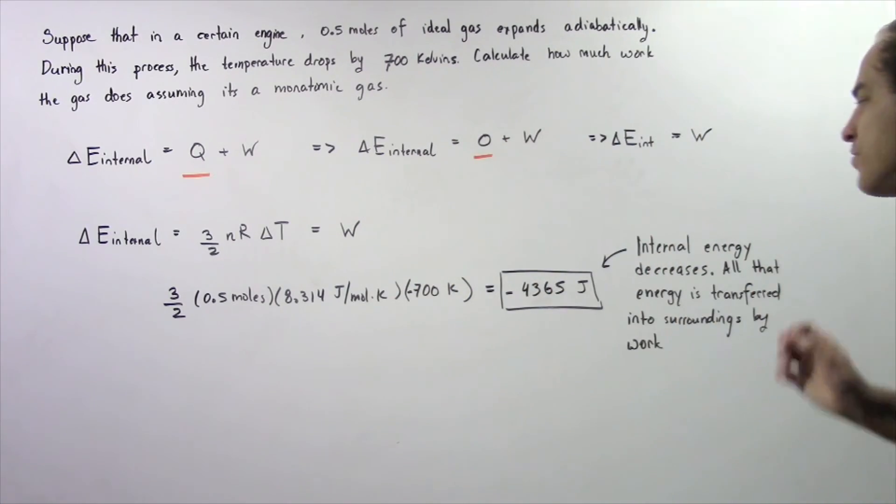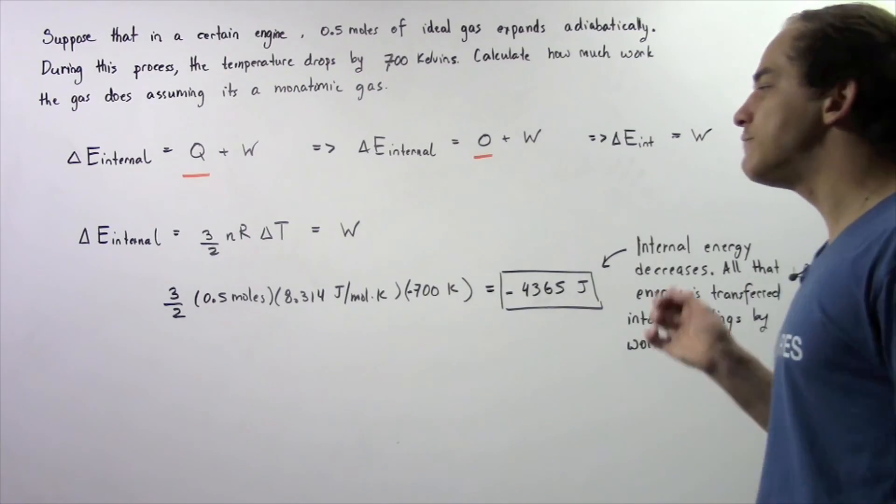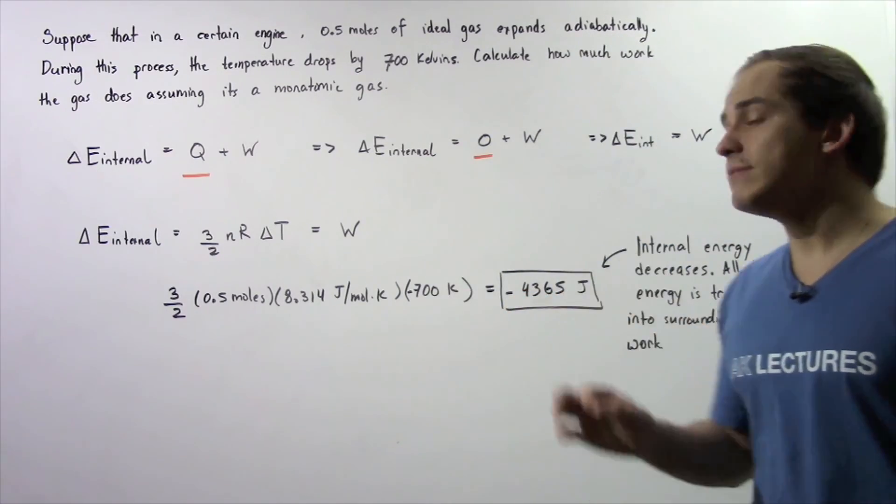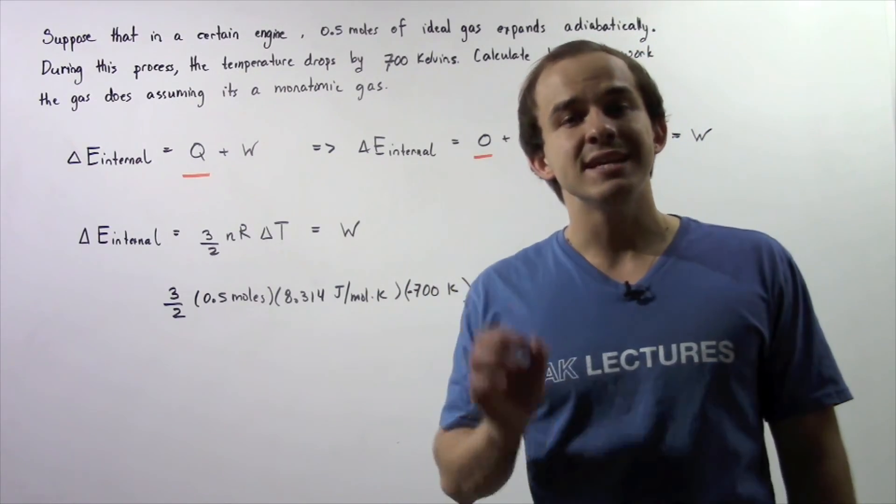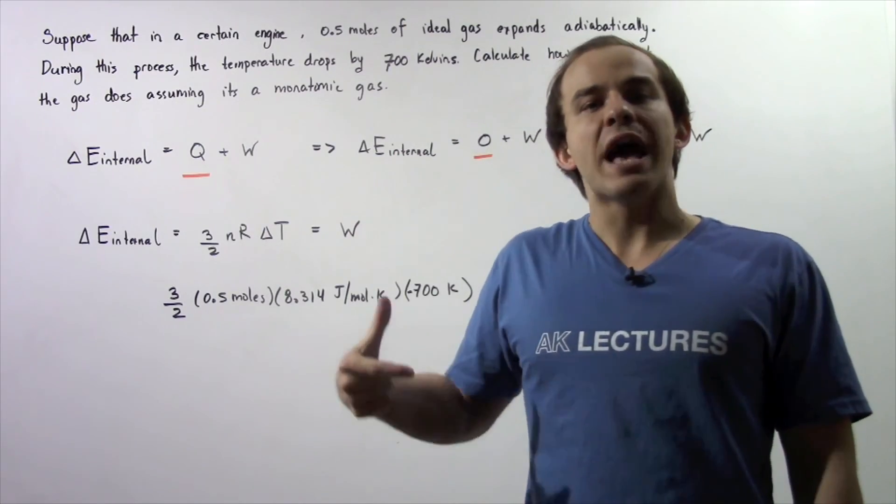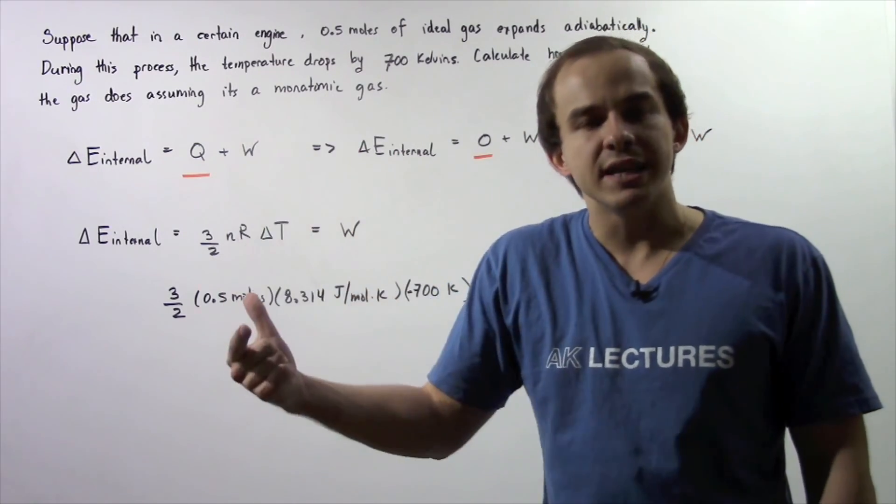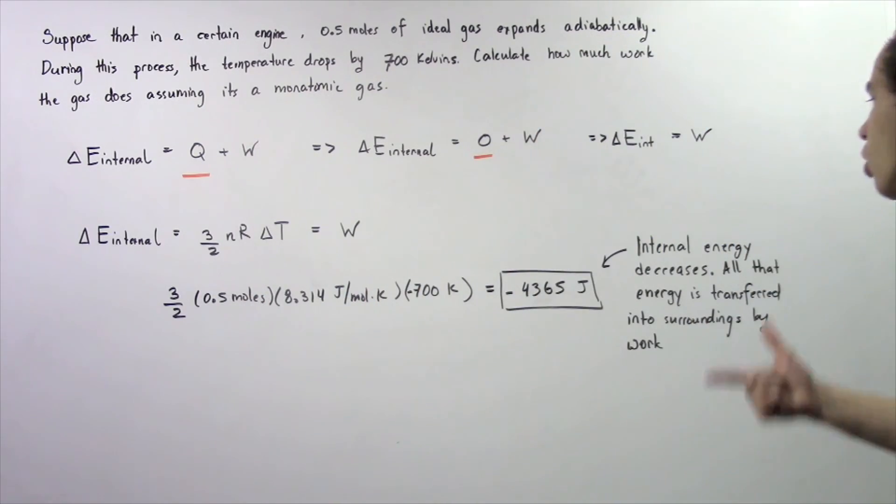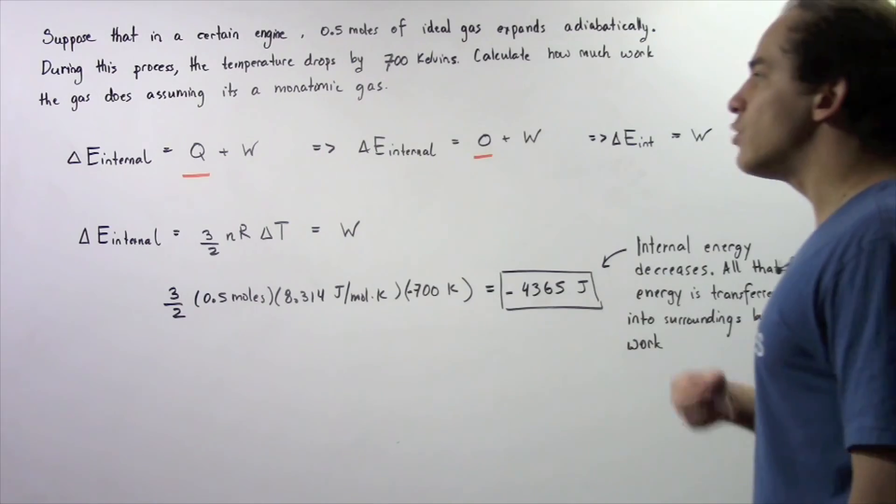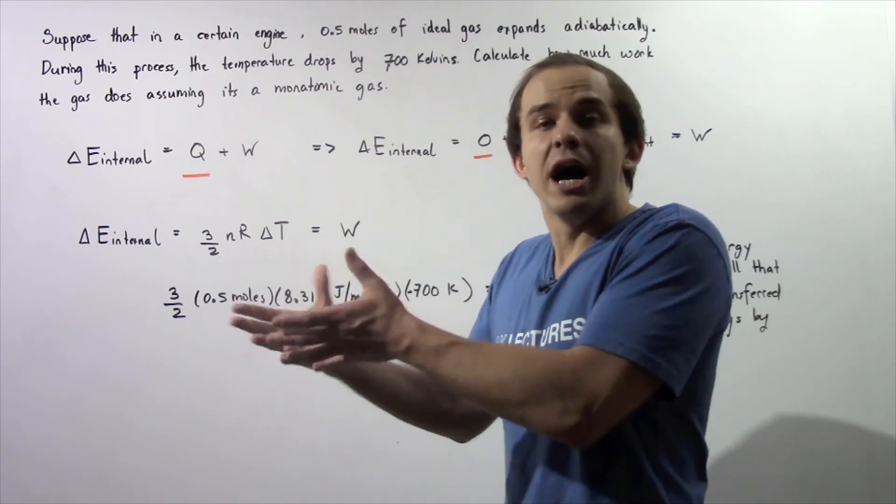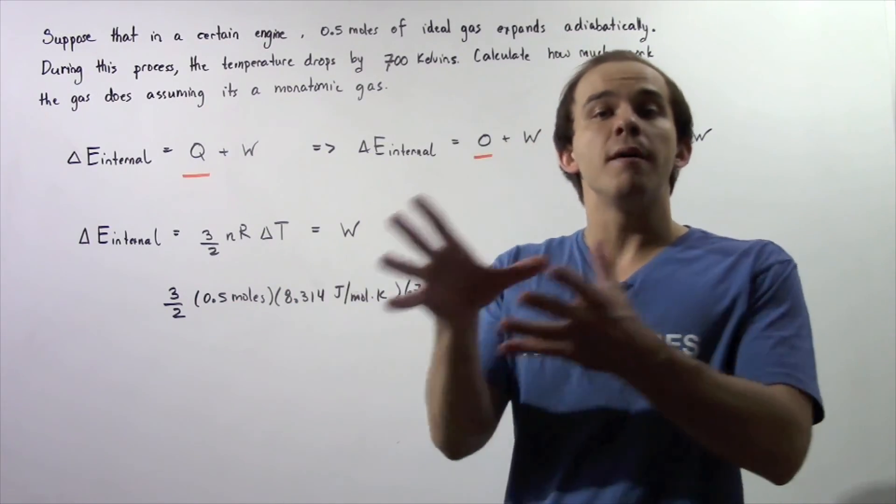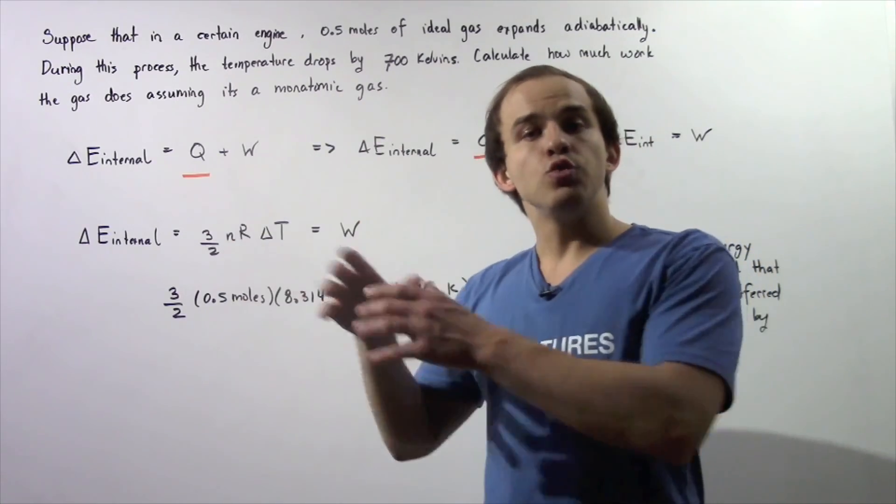This negative simply means that the internal energy of our ideal monatomic gas system decreases and all that energy is transferred into the surroundings by the way of work. The gaseous system expands, let's say, the piston and it does work on the surroundings. Energy is transferred from our ideal gas system to the surroundings.